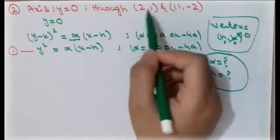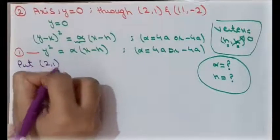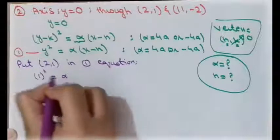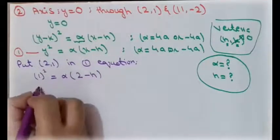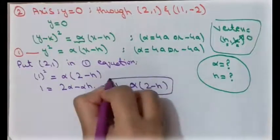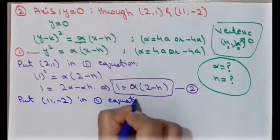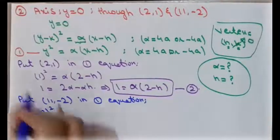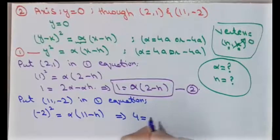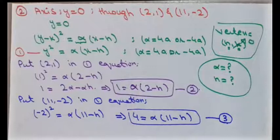Since two points lie on the parabola, we substitute them into the first equation one by one. Putting point (2, 1): 1² = alpha(2 - h), giving 1 = 2·alpha - alpha·h — this is our second equation. Putting the second point, we get 4 = alpha(11 - h) — this is our third equation.